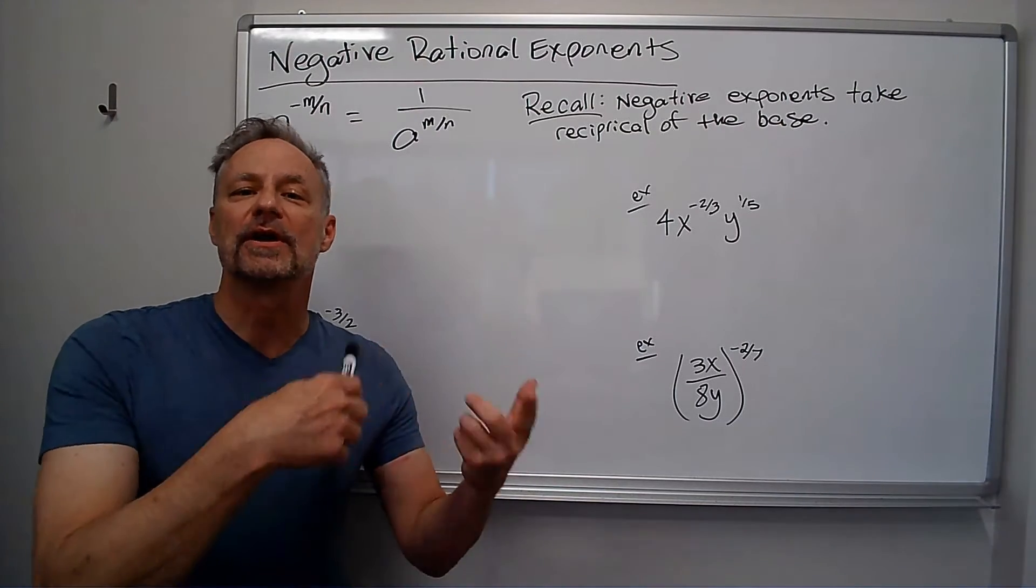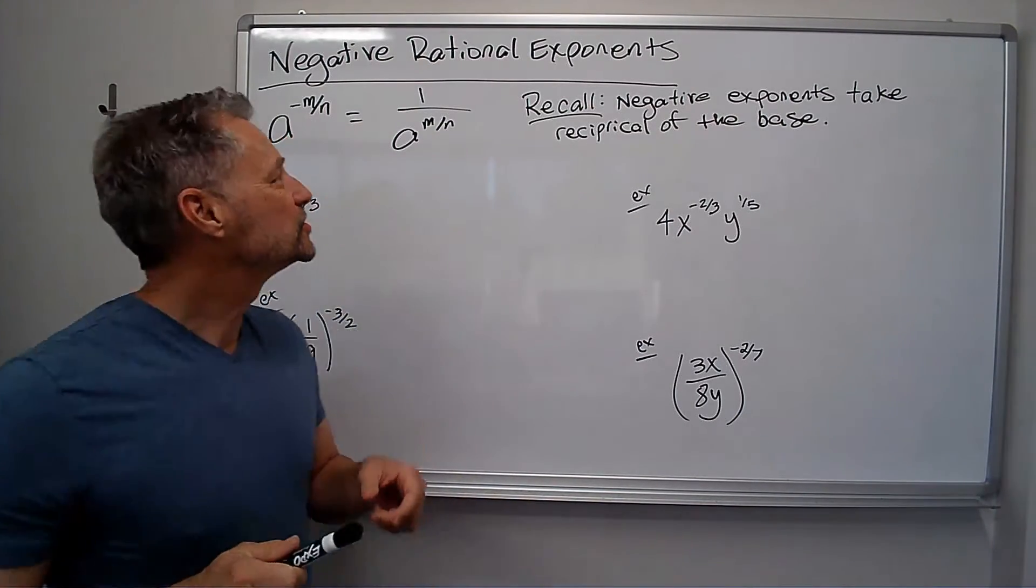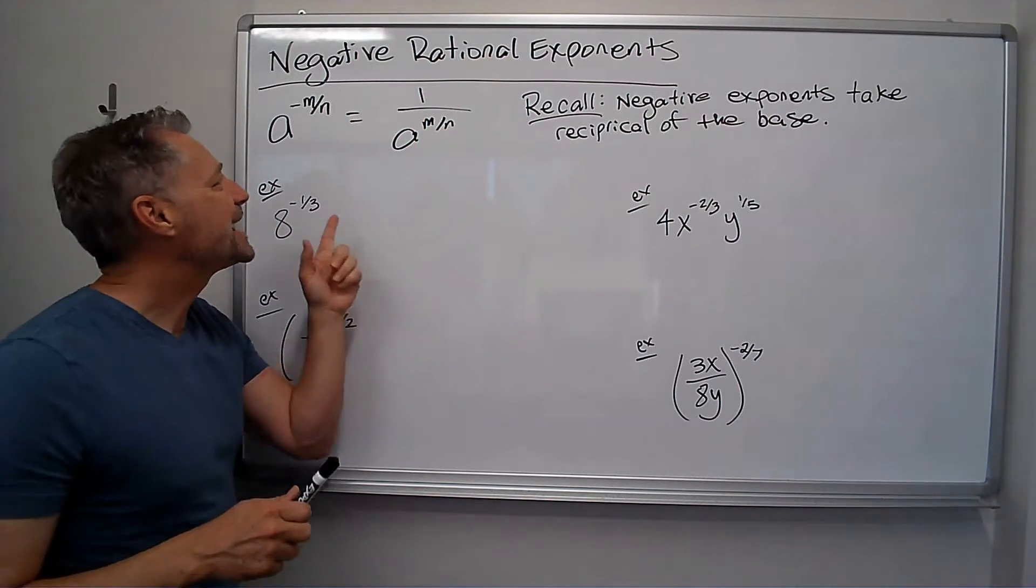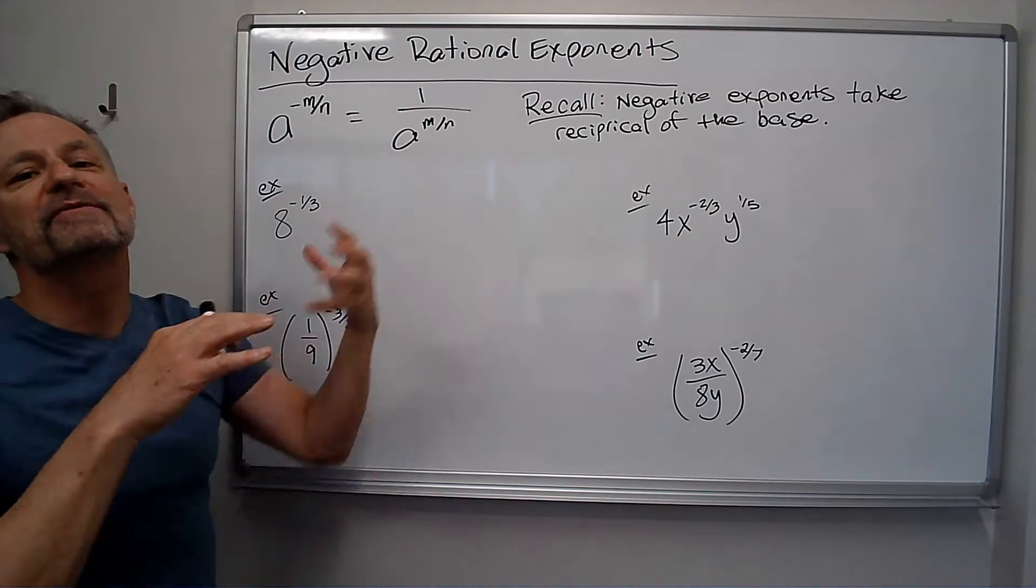So if you don't understand that part, watch that also, and it'll help you with this. Alright, so we're just adding the negative part to the rational exponents, and remember, a negative exponent just takes the reciprocal of whatever the base is.